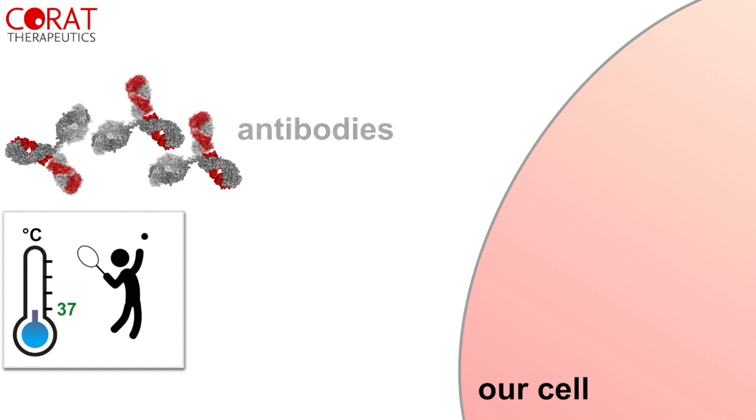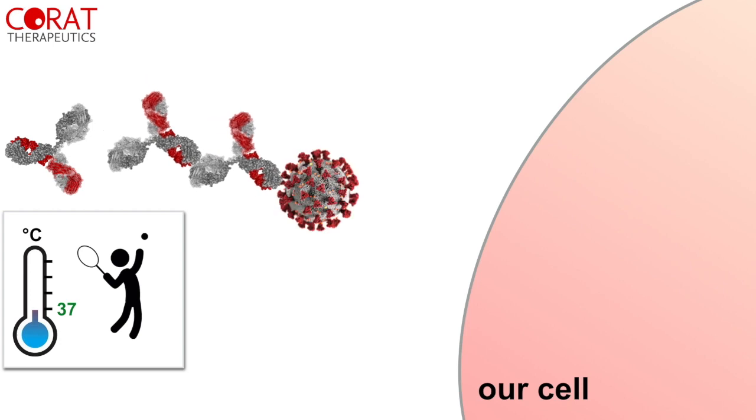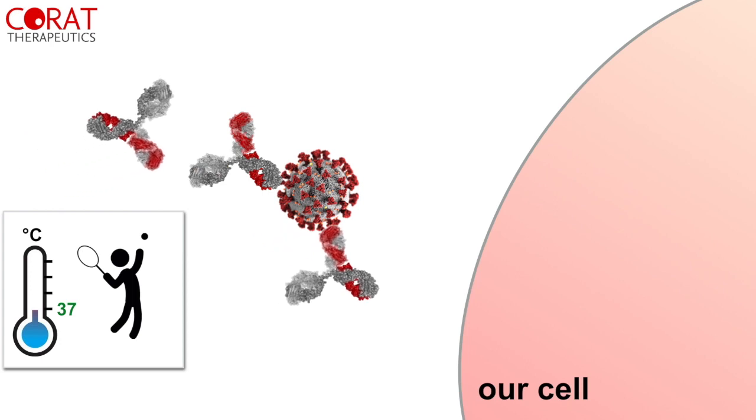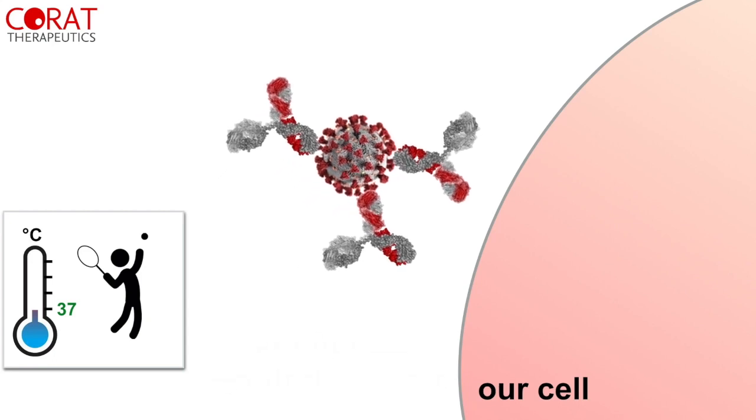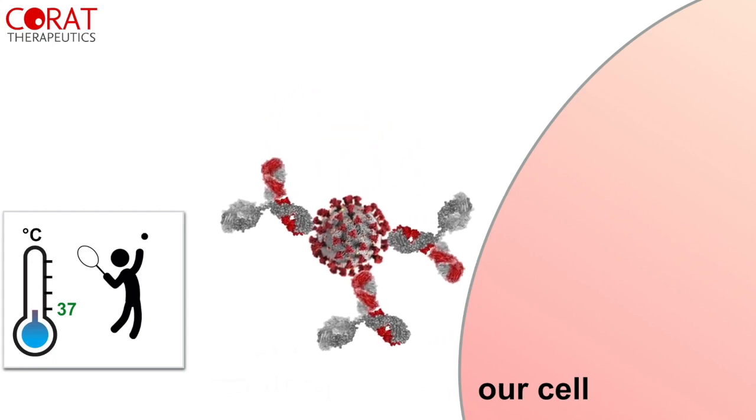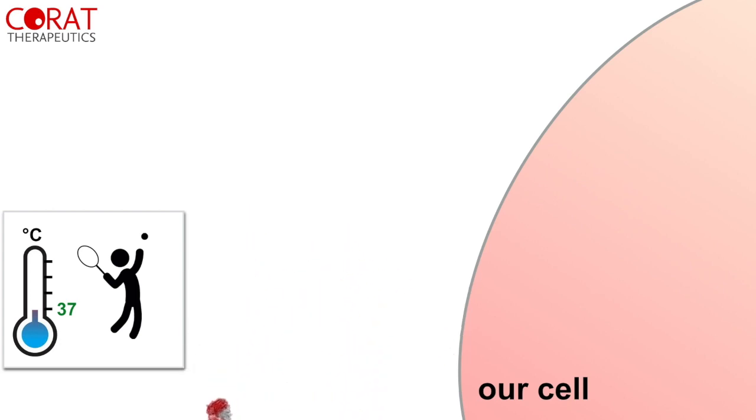And if they find a gangster, here is one the coronavirus, they can literally grab the gangster just by binding very tightly to this virus surface. With antibodies bound to its surface the virus cannot anymore enter the cell. The virus can then be removed by other parts of the immune system and we stay healthy and happy.